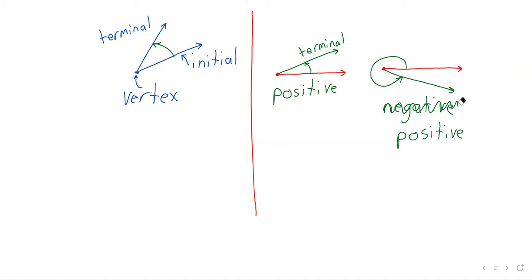So these little arcs that we draw — we don't always draw the arrow, but that's there to tell you what the angle is. It's so that this angle, where we go from initial to terminal in a counterclockwise way, and this angle, where we go from initial to terminal in a clockwise way, can be distinguished. If you didn't have that — if you just had the vertex and the rays — those angles would look identical. Questions about this?